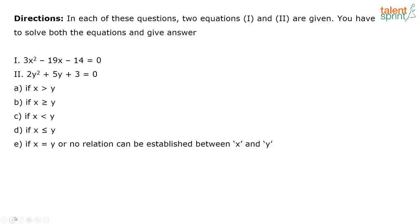The next question is on equations. What is given here? You have two equations. 3x squared minus 19x minus 14 is equal to 0.